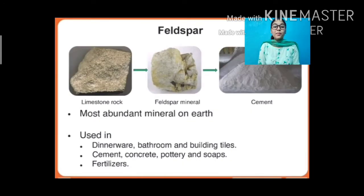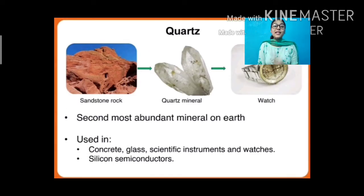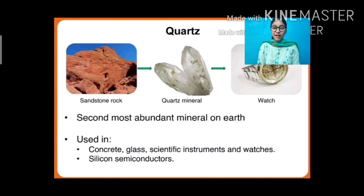Which is the most abundant mineral found on earth? That is feldspar. Feldspar is the most abundant mineral on earth and it is used in dinnerware, bathroom and building tiles. It is also used in cement, concrete, pottery, soaps, and even in fertilizers. Which is the second most abundant mineral on earth? That is quartz. Quartz is the second most abundant mineral and it is used in concrete, glass, scientific instruments, watches, and silicon semiconductors.